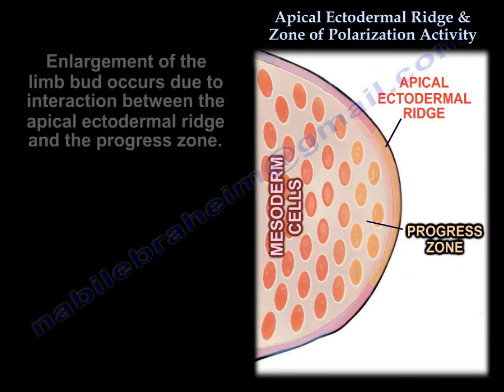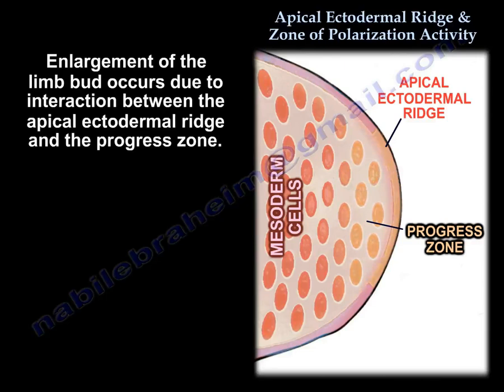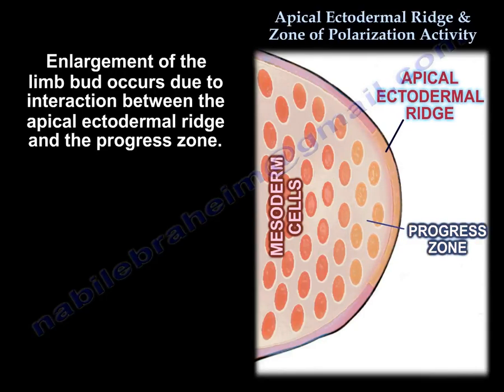Enlargement of the limb bud occurs due to the interaction between the Apical Ectodermal Ridge and the progress zone.